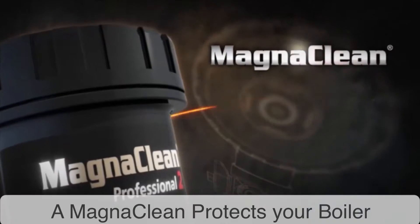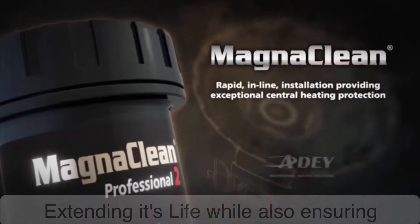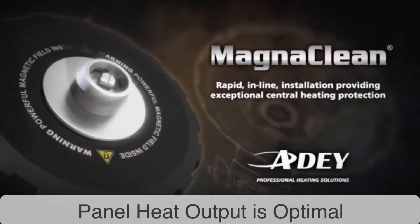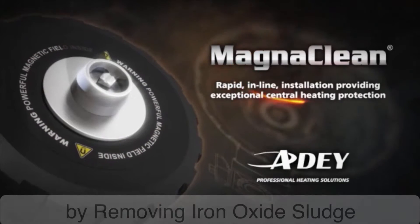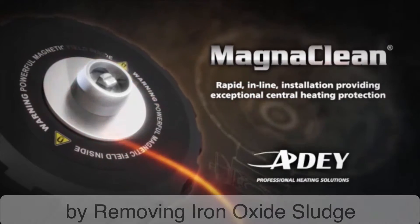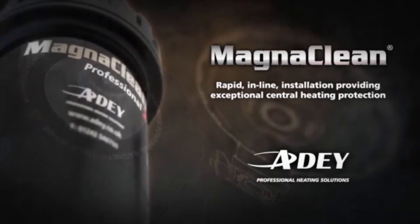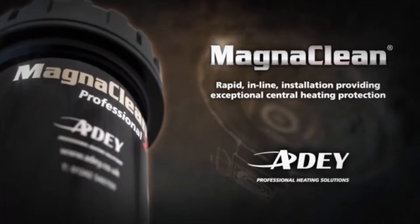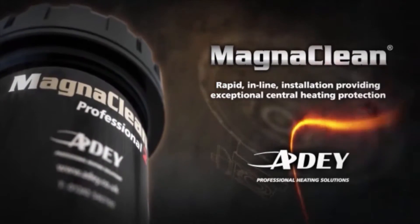MagnaClean has been developed by the number one manufacturer of magnetic filtration. MagnaClean Professional 2 delivers rapid in-line installation and exceptional ongoing central heating system protection against the harmful effects of black iron oxide sludge and non-magnetic debris.